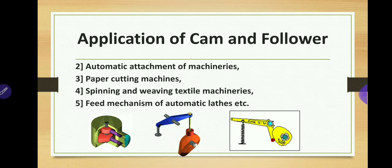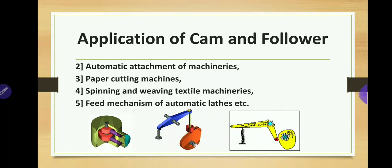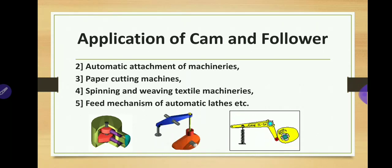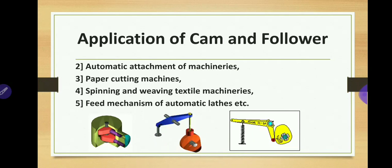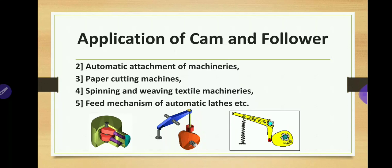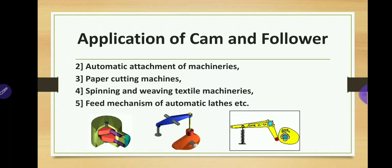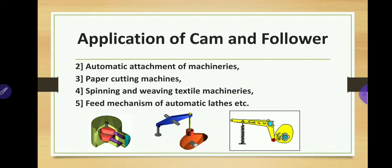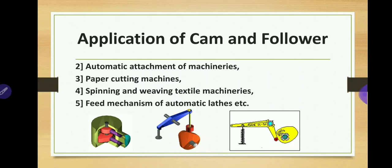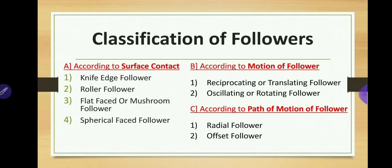Many other examples include automatic attachments of machineries, paper cutting machines, spinning and weaving textile machineries, and feed mechanisms of automatic lathes. In all these examples we are using cam and follower.